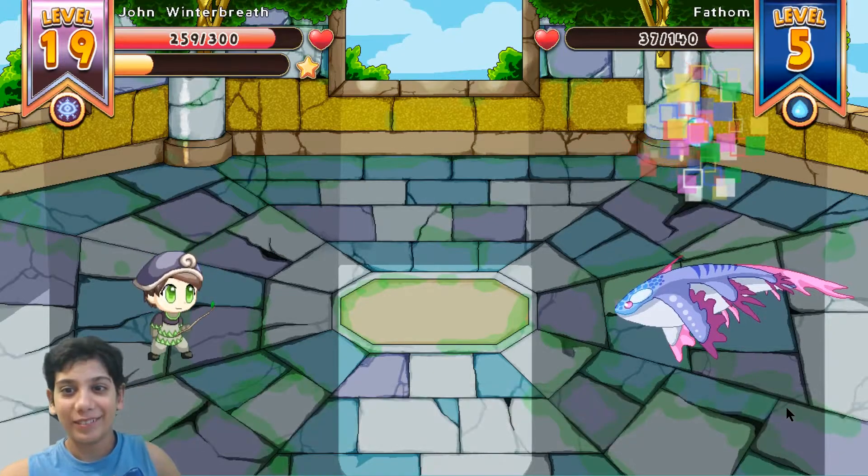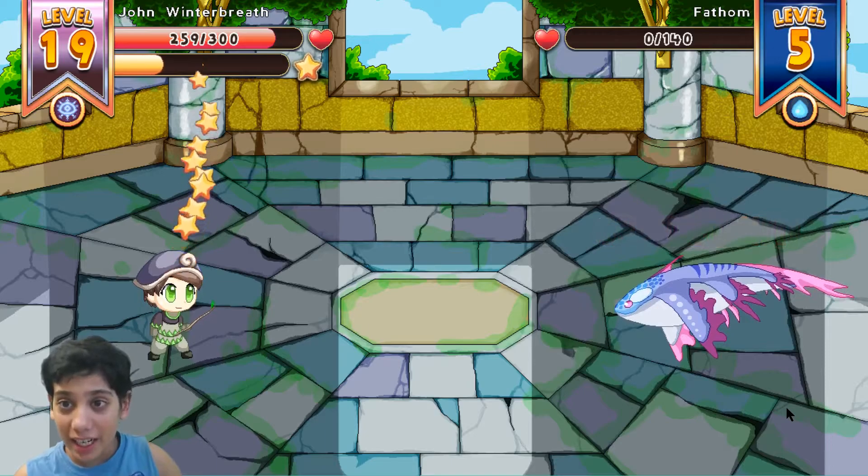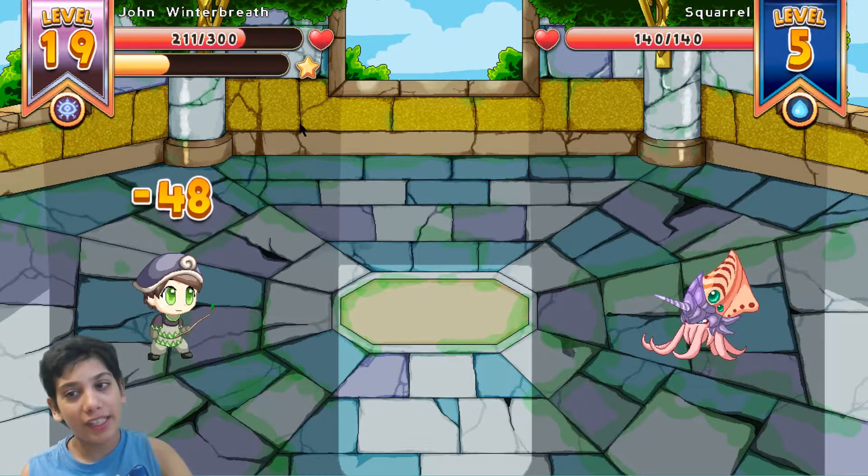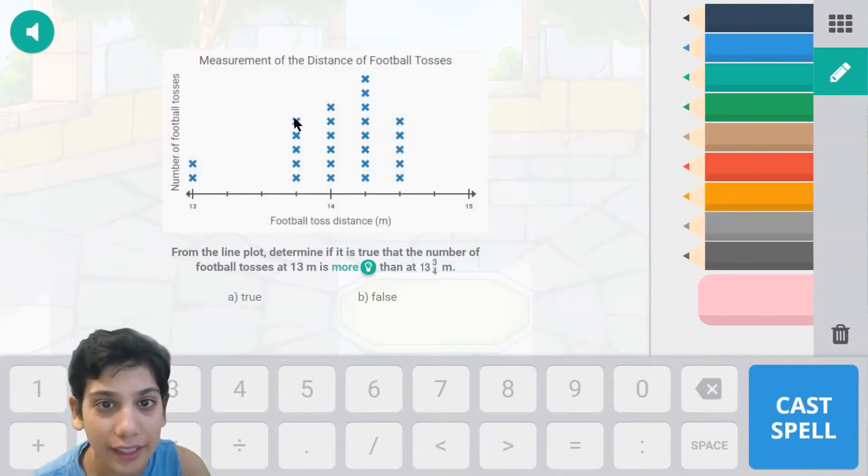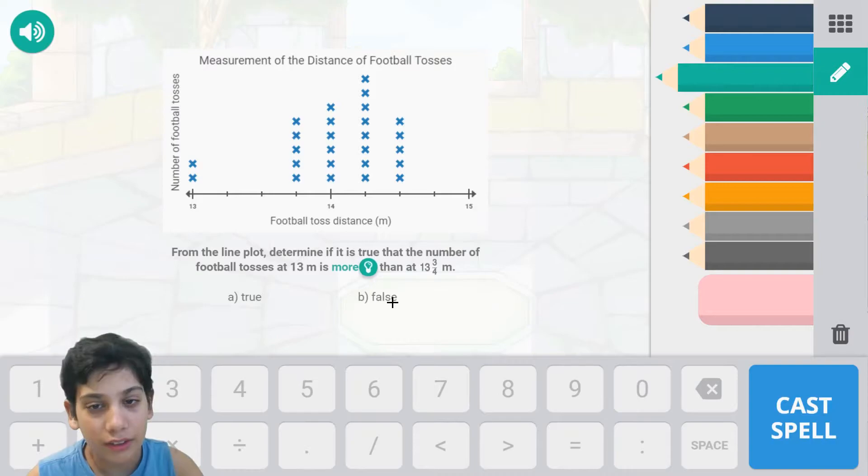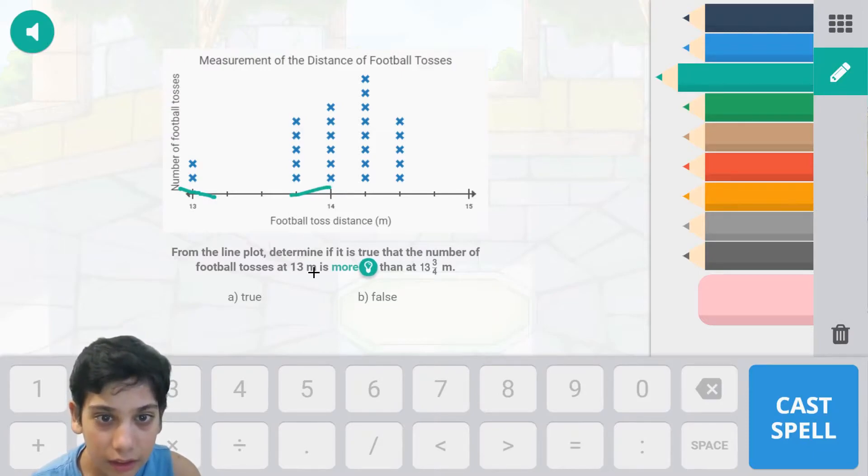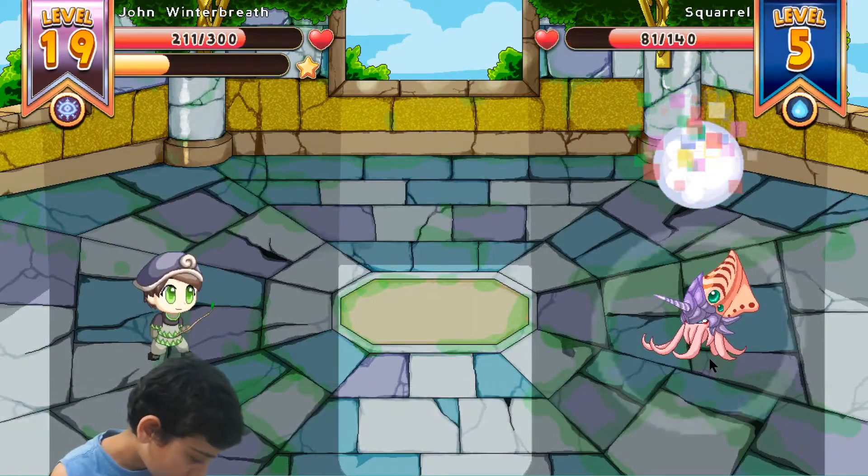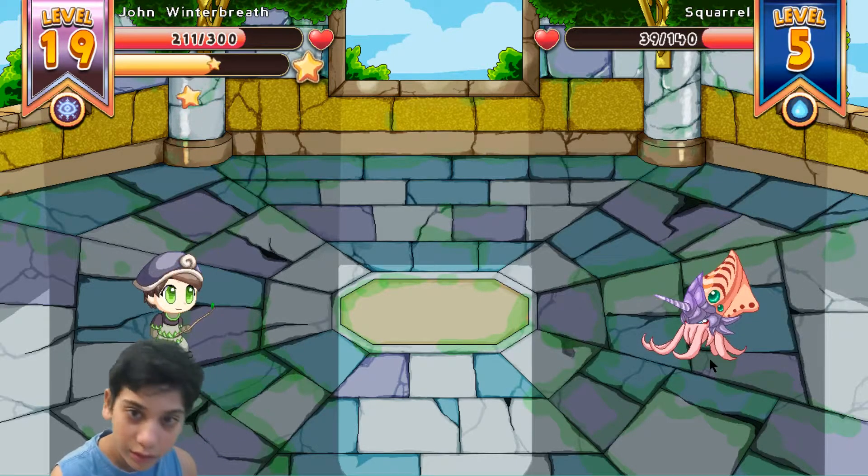Correcto! 75 damage, we got a critical hit! Oh yeah! Water bomb, 48 damage, that's so low. Let's just conjure and let's hear it. And the answer is—so 13 meters is right there and 13 and a half is right there, so that is false. 13 and three-fourths is right there. Cast spell.